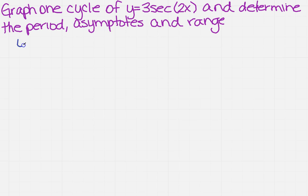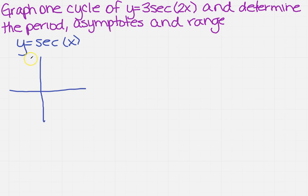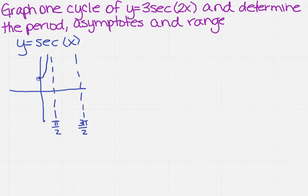We start with our base function, which is y equals the secant of x. This is one that's usually given to you in your textbook, so hopefully you've looked at it. The base secant function has two vertical asymptotes: one at pi over 2 and another at 3 pi over 2. The graph comes down on either side of those asymptotes, forming a nice arch, with the lowest point at 1 on one side and negative 1 on the other.